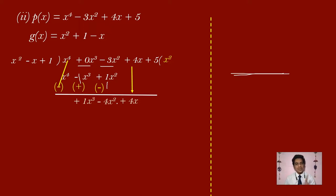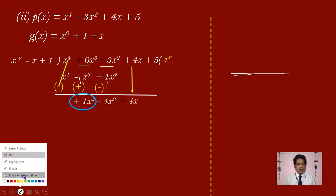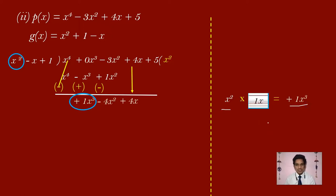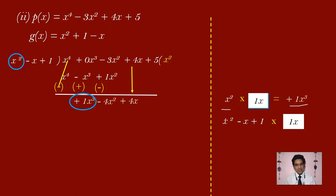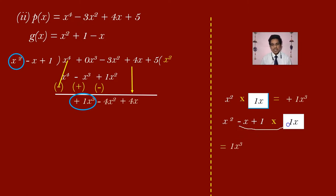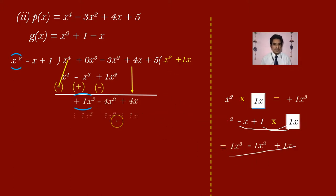The first term in the new dividend is plus 1x cube, and the divisor's first term is x square. x square multiplied by x gives x cube, so we multiply with x. Multiply the divisor x square minus x plus 1 by x: x square into x gives x power 3, minus x into x gives minus x square, and 1 into x gives plus x. Write x in the quotient and write x cube minus x square plus x below the dividend.